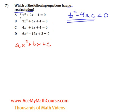So for the first one we have, a is 1, b is 2, and c is negative 1.